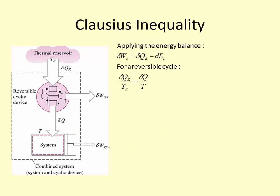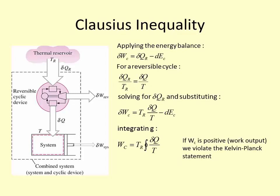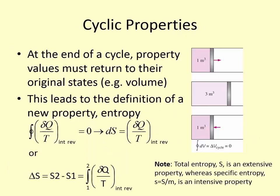This Clausius inequality was derived using a heat engine depositing heat to a piston-cylinder device with a work output, plus a reversible cyclic device. The derivation showed that in order for work to be a positive output, we would have to violate the Kelvin-Planck statement — therefore this inequality is negative or less than or equal to zero. We cannot perform a cycle with heat transfer over a constant temperature and have it be greater than or equal to zero.